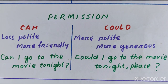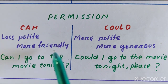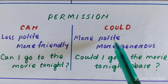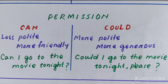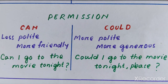Let's look into the next usage: permission. We can use can and could to ask for and give permission. Can is less polite and more friendly, while could is more polite and more generous. For example: 'Can I go to the movie tonight?' — here, can is used in a more friendly way. And: 'Could I go to the movie tonight, please?' — here, could is used in a more polite and generous manner.